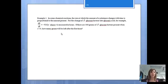Let's take a look at example one. In some chemical reactions, the rate at which the amount of a substance changes with time is proportional to the amount present. For the change of gluconolactone into gluconic acid, for example, this would be the differential equation that goes with it, where t is measured in hours.